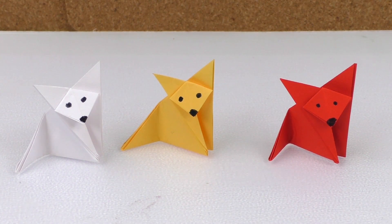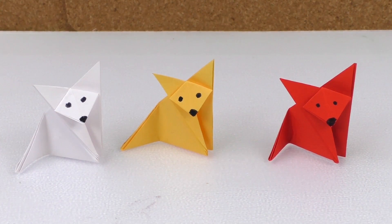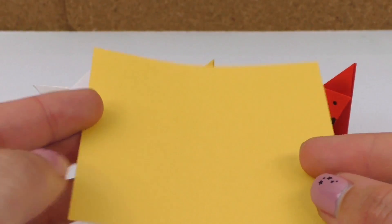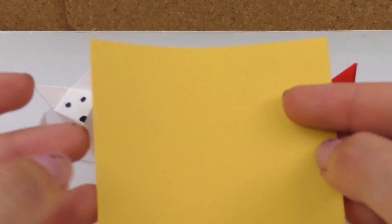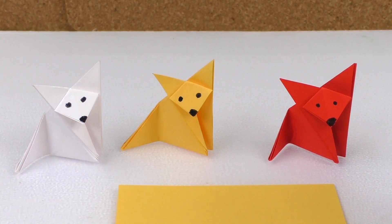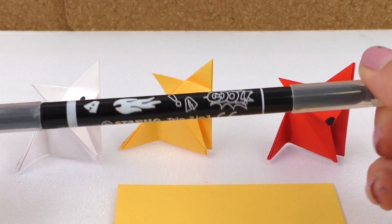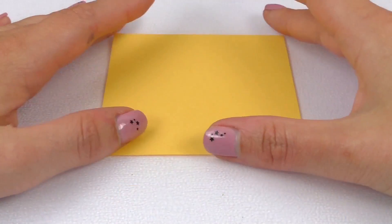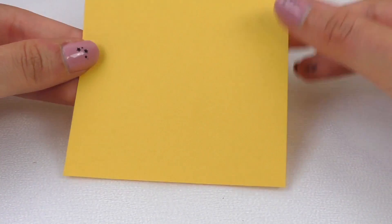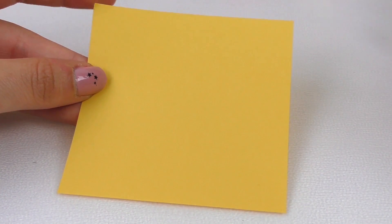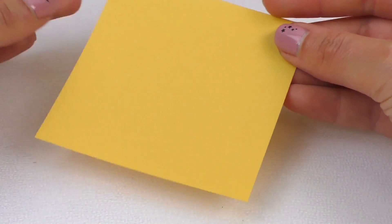They're really easy to make and they look really cute. I have three little foxes right here. All we need for this project is a square piece of paper. It doesn't matter how big or small it is. All that matters is that it's a square. We need a black marker. Here's our square. As I said before, it can be as big or as small as you want.